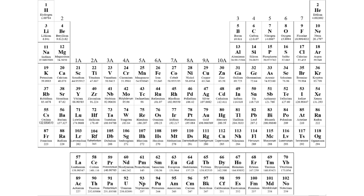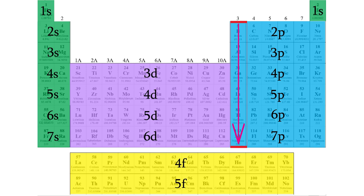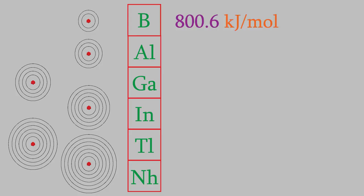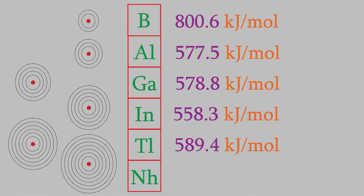As we saw last time, the radius of an atom increases as we go down a column of the periodic table. This is because as we go down, the value of n increases, which means the number of electron shells increases. As you might guess, the farther an electron is from the nucleus, the less strongly it's held by the nucleus. This means it's easier to take away from the atom, so the ionization energy is higher at the top of the periodic table. For example, if we look at the atoms in this column, the ionization energy decreases from 800.6 kJ per mole for boron down to 704.9 kJ per mole for nihonium.